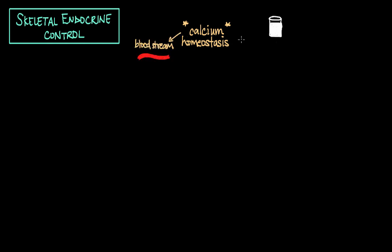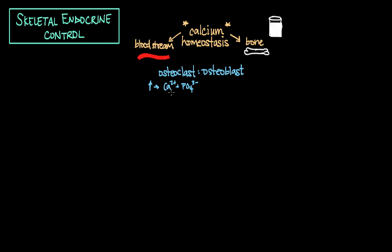Calcium homeostasis — the flow of calcium between the bloodstream and bone — is actually under endocrine or hormonal control. These hormones alter the ratio of osteoclast activity to osteoblast activity. As osteoclast activity increases relative to osteoblast activity, there is an increase in the liberation of calcium and phosphate from bone into the bloodstream, because osteoclasts cause bones to break down.